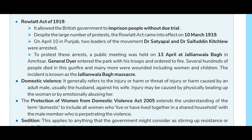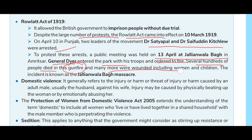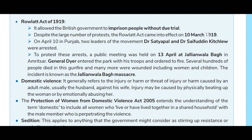The Rowlatt Act of 1919 allowed the British government to imprison people without due trial; despite large protests, it came into effect on 10th March 1919. On April 10, in Punjab, two leaders Dr. Satyapal and Dr. Saifuddin Kitchlew were arrested. To protest this arrest, a public meeting was held on 13th April at Jallianwala Bagh in Amritsar. General Dyer entered the park with troops and ordered to fire; several hundreds of people died and many more were wounded, including women and children. This is known as the Jallianwala Bagh massacre.